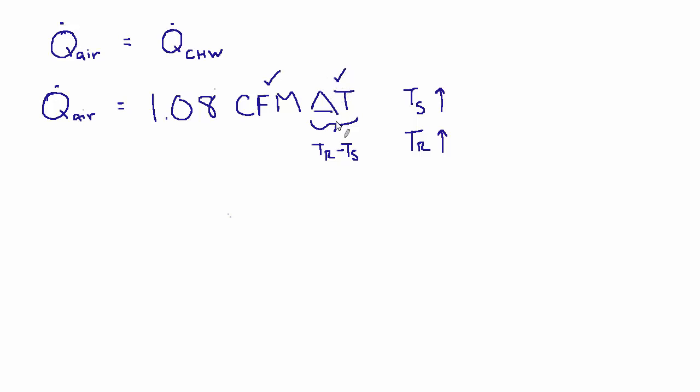Now that may not be precisely true. The return temperature may not go up quite as much as the supply temperature did. So if this goes up one degree, this might not go up one full degree. And in that case, delta T is slightly smaller, and the CFM will have to increase slightly to meet the same heat load. So in that case, there would be an increase in fan energy.